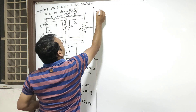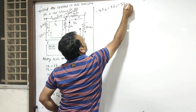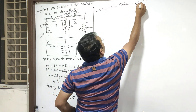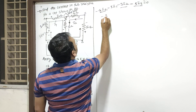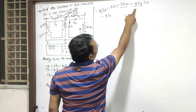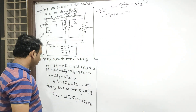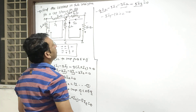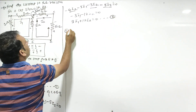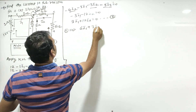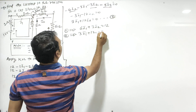Solve करते हैं: minus 4 I2 minus 3 I1 minus 3 I2 minus 5 I2 is equals to 0. इन सबकी addition होगी — minus 3 I1, और 4 plus 3 plus 5 यानी minus 12 I2 is equals to 0. Multiply with minus — equation number 2 आया: 3 I1 plus 12 I2 is equals to 0. Equation number 1: 6 I1 plus 3 I2 is equals to 12. Equation number 2: 3 I1 plus 12 I2 is equals to 0.